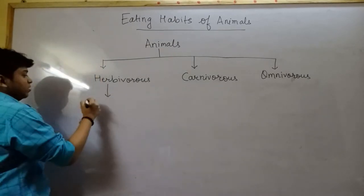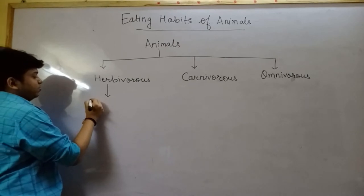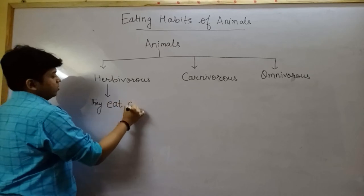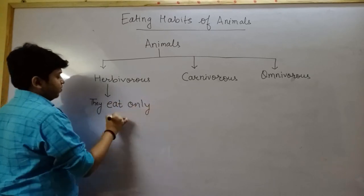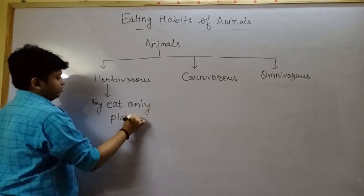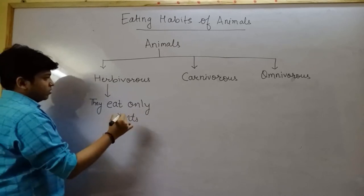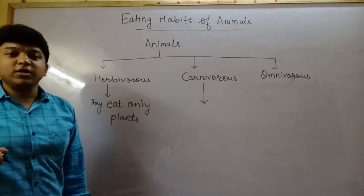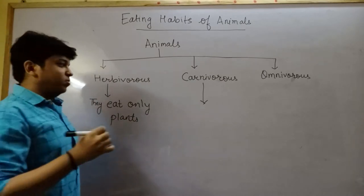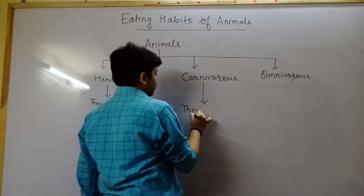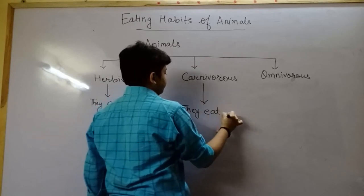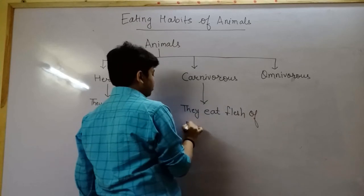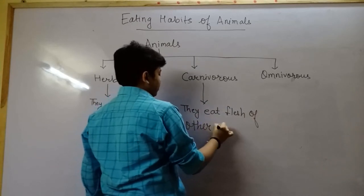So herbivorous animals eat only plants. In carnivorous animals, they eat only flesh of other animals.